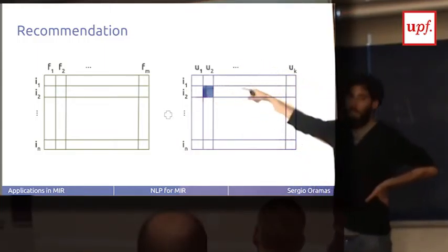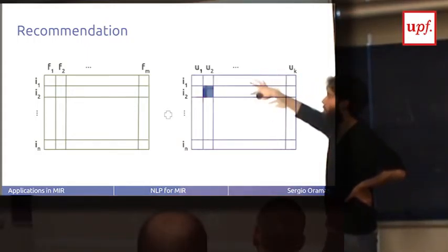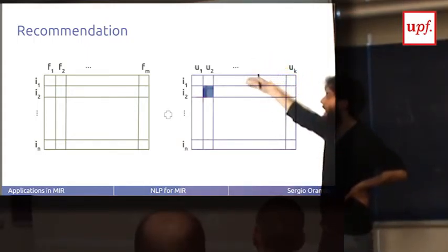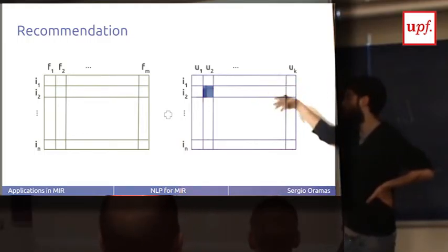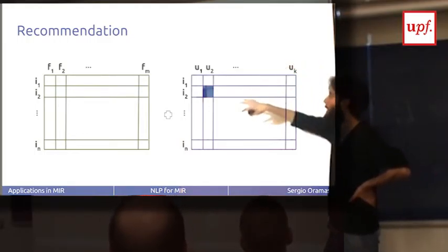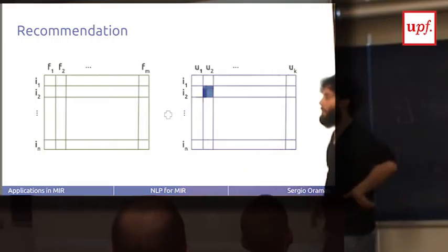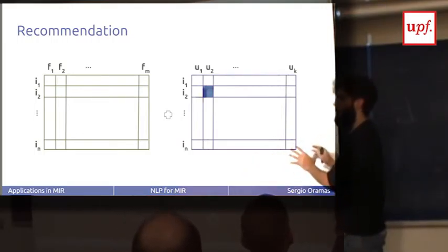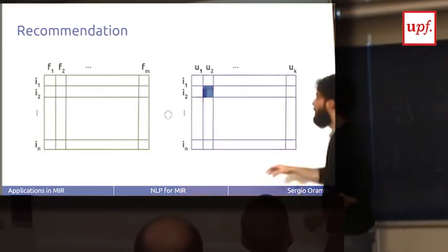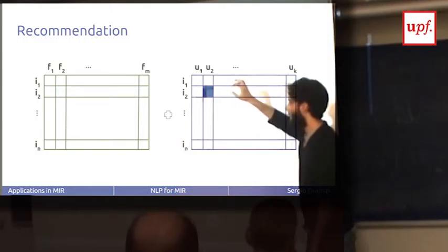For classification, we have a matrix of items and features. We have a vector of labels for these items. Then we split into training and test, and we try to train a system that is able to learn to give these labels given the features.